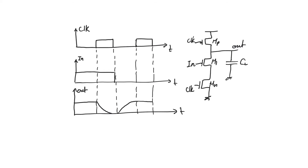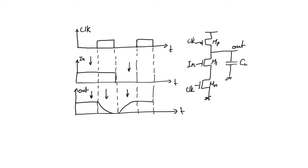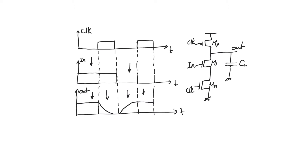Let's look again at the dynamic CMOS inverter and the two clock periods. In the first clock period we use an input value of one; in the second, an input of zero. In the first pre-charge phase we pre-charge to VDD. In the first evaluate phase we discharge the output node to ground. In the second pre-charge phase we pre-charge back up to VDD, and in the second evaluate phase we preserve VDD at a high-impedance node.